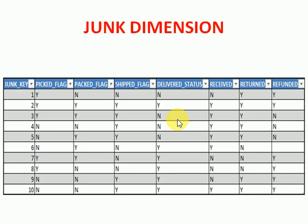If you have more rapidly changing dimensions, it is better to create another dimension with flag-related columns — that dimension we can call a Junk Dimension. Thank you for watching my videos. Please subscribe to my channel to get more videos and updates. Thank you very much.